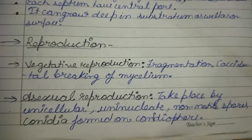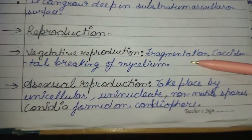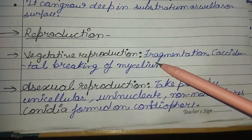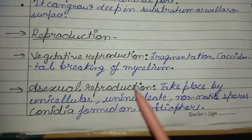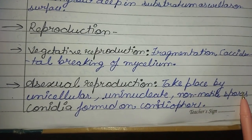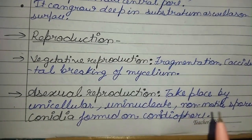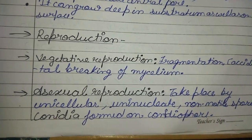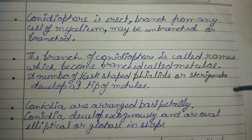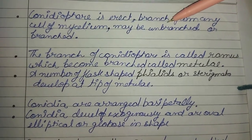Talking about reproduction, the vegetative reproduction occurs by fragmentation, which can happen by the accidental breaking of the mycelium. Asexual reproduction takes place by unicellular, uninucleate, non-motile spores which are Conidia formed on the Conidiophore. The Conidiophore is erect, branched from any cell of mycelium, and may be unbranched or branched.